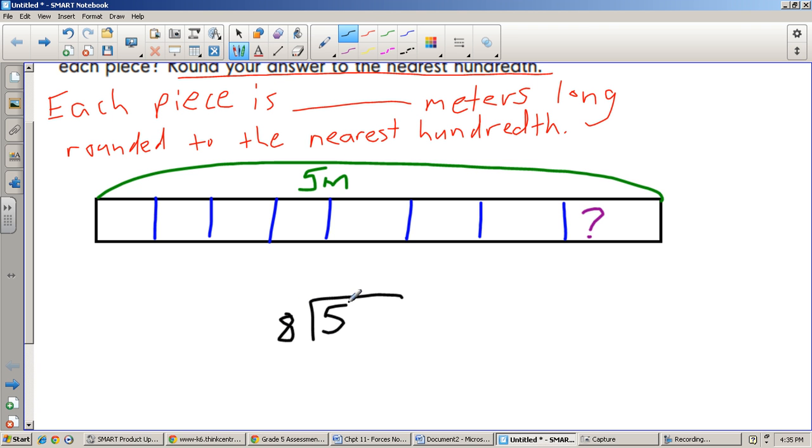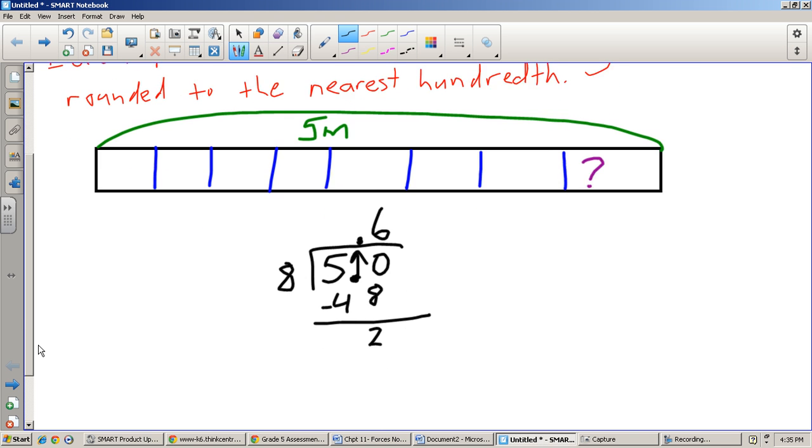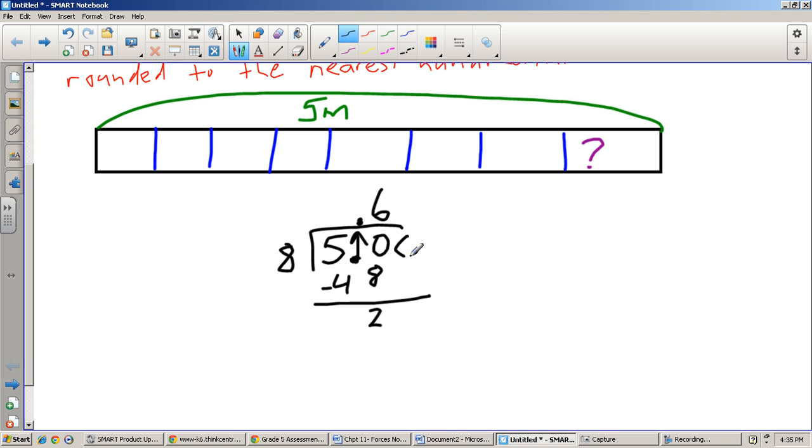Eight goes into five, doesn't. I have to put a decimal point here. And the first thing you do with division and a decimal is bring it straight up. Eight goes into 50, there we go. Six times. Six times eight is 48. Subtract. I get two. Bring down a zero.